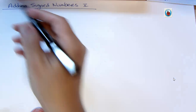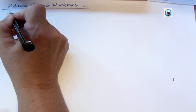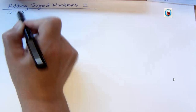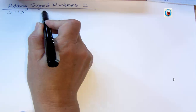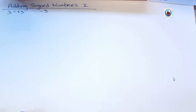A signed number is just a number that has a sign in it. If we have three, that actually means positive three. We don't have to put a sign in front of positive numbers, but it's signed because there's an understood positive there. Or we could have negative three, which has a definite sign in front of it. So that's what I mean by signed numbers: positive and negative numbers.